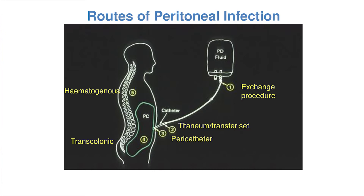Then we think about the connector where you connect the bag to the catheter, and the mini-set line that lies between the Y-set tubing and the catheter. Your procedures for changing that tubing need to be very, very robust, and all of this is in the guideline lines. Patients need to be trained on how not to get infection around their exit sites. But there is very little that we can do about trans-colonic spread of hematogenous organisms, so there's always going to be some things causing infection that are very hard to prevent.